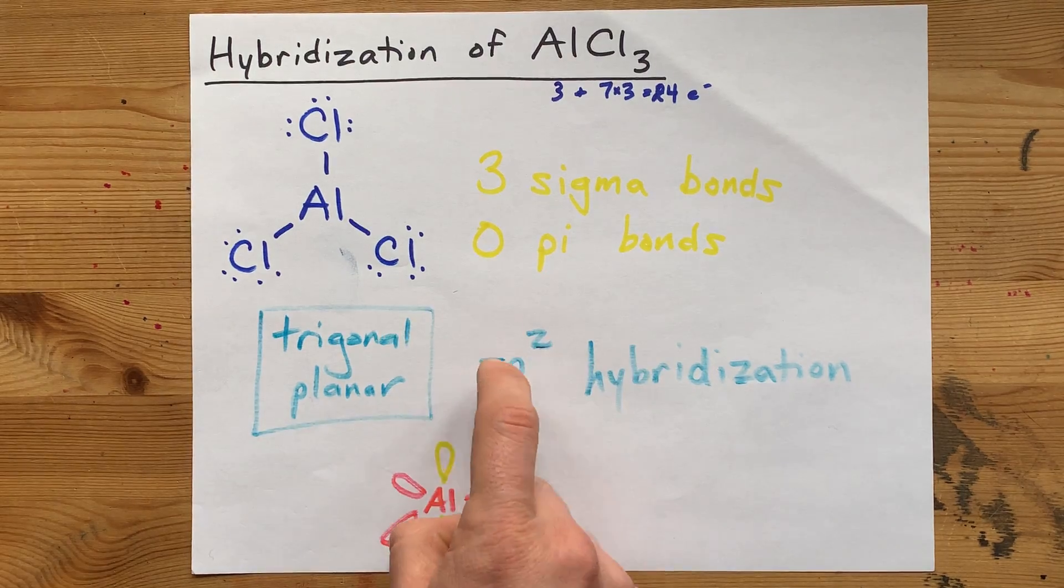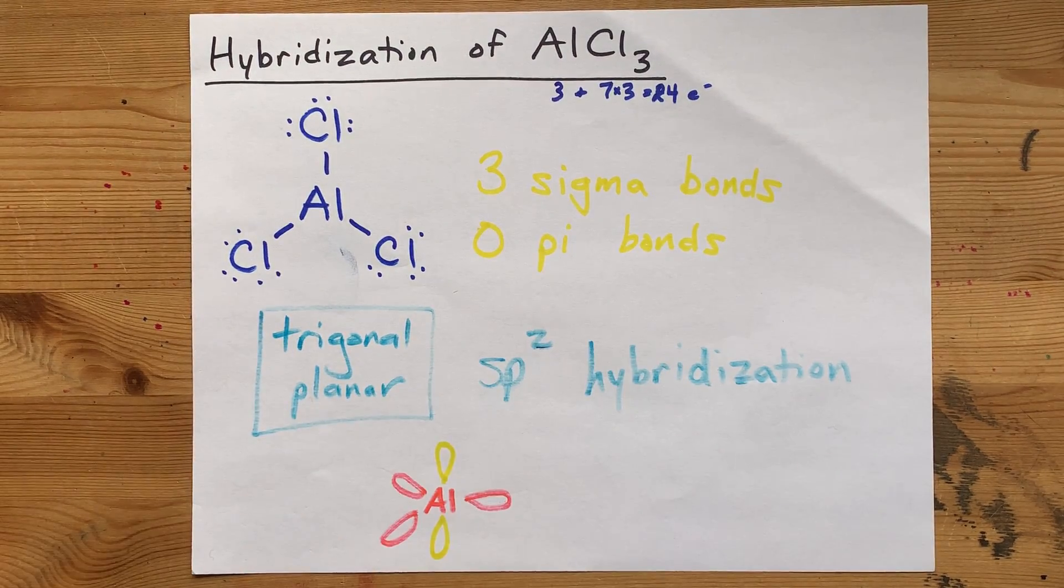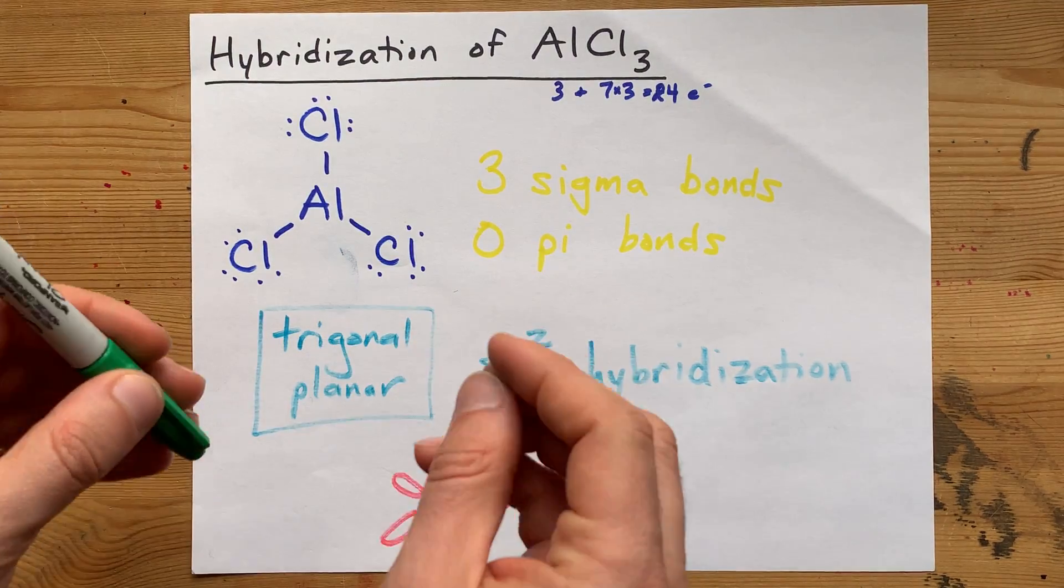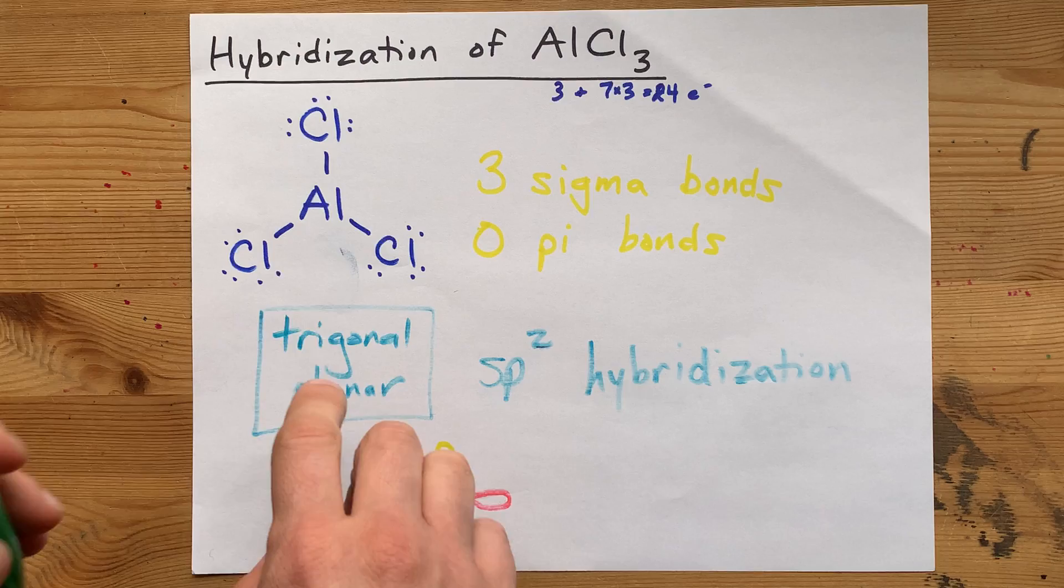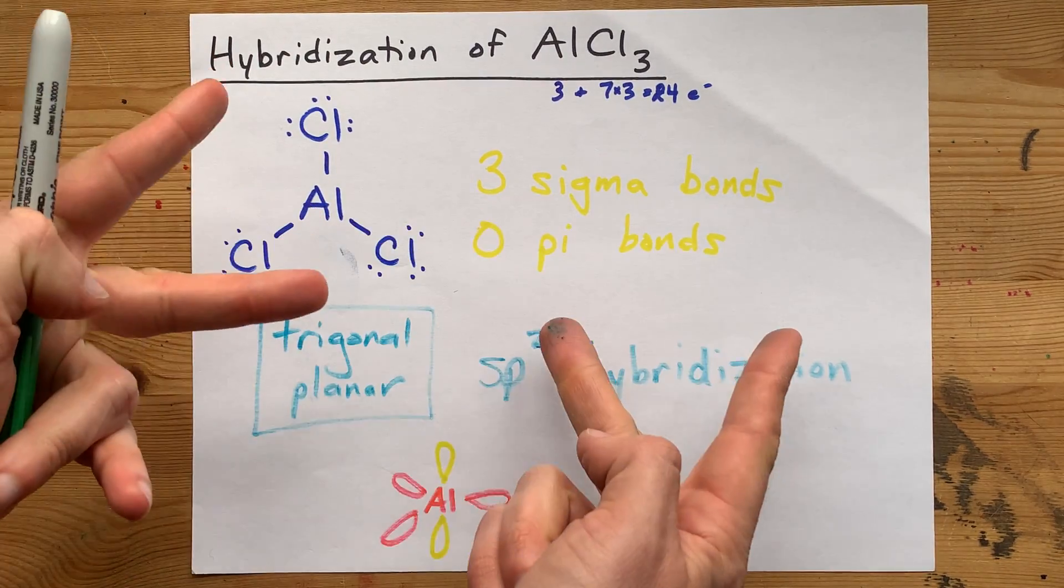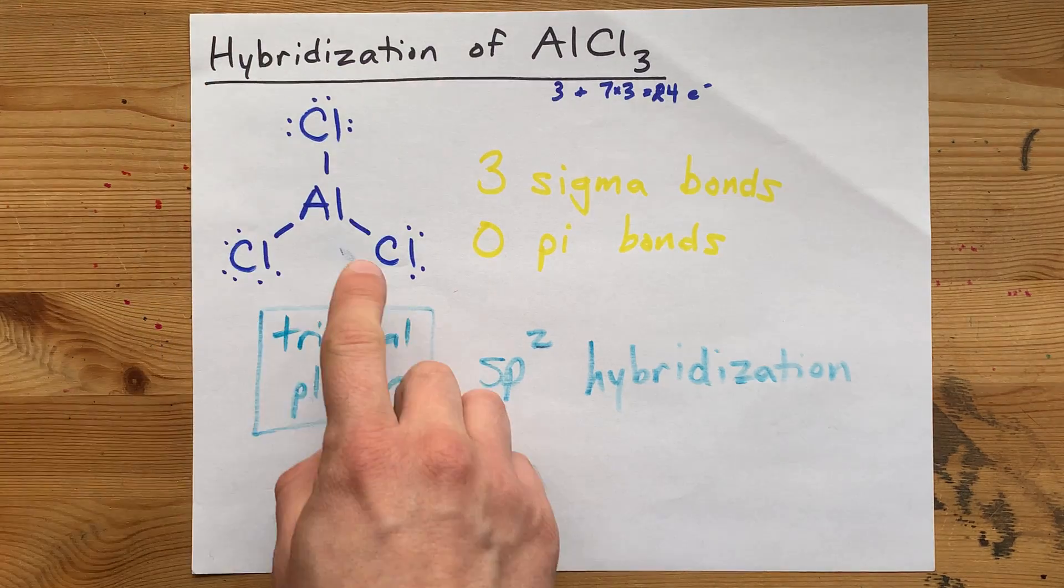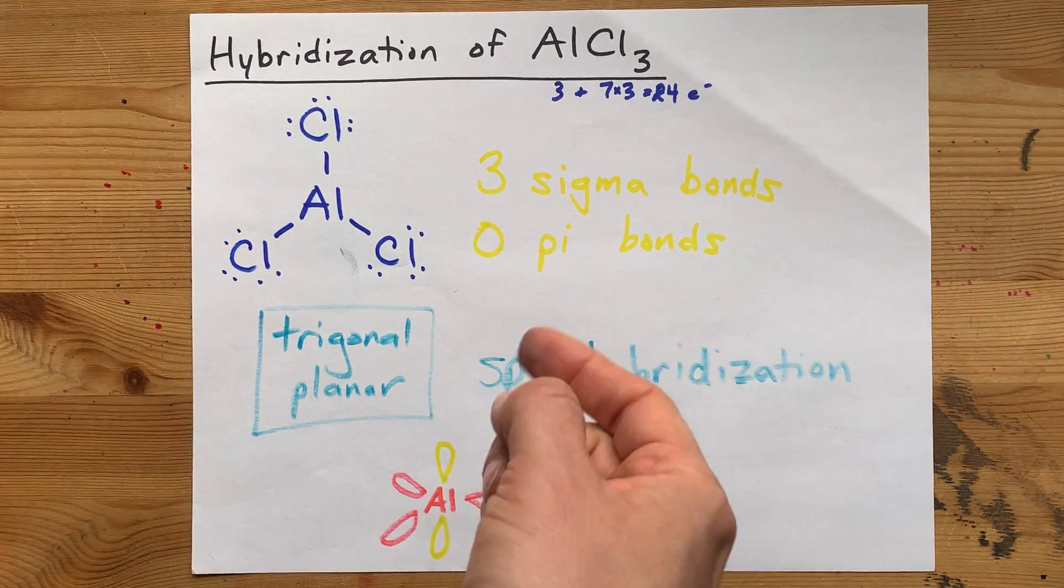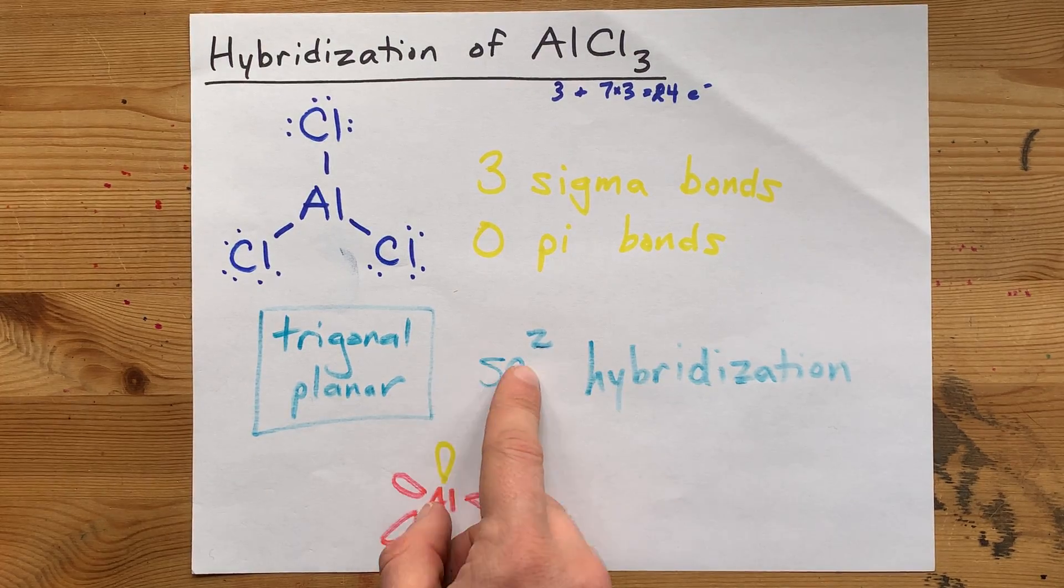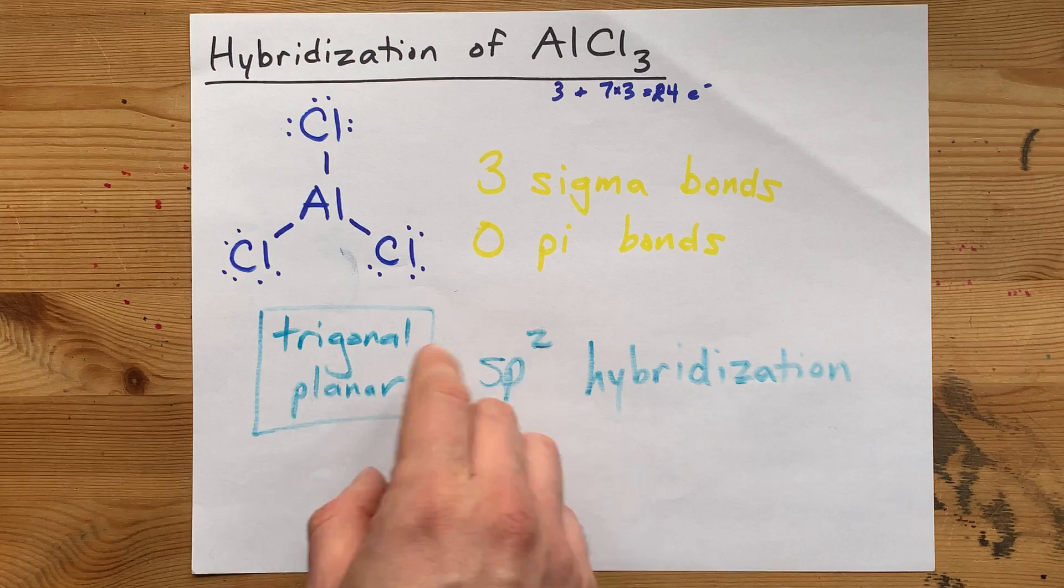Great. Your teacher wanted to hear sp2 hybridization. Let me just say as a caveat that when you have liquid AlCl3, two of these molecules kind of combine together, and the Al is then tetrahedrally arranged. You could get away with saying it's sp3 hybridized at that point.